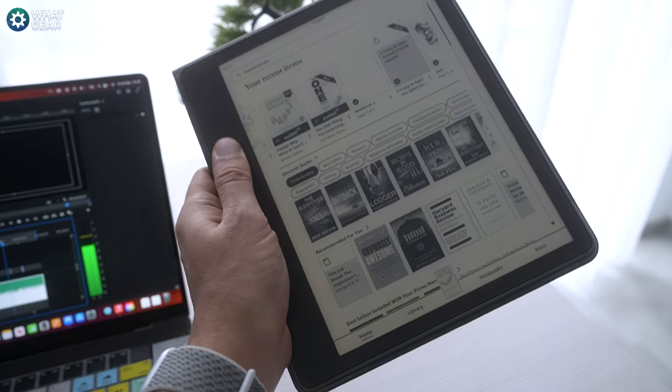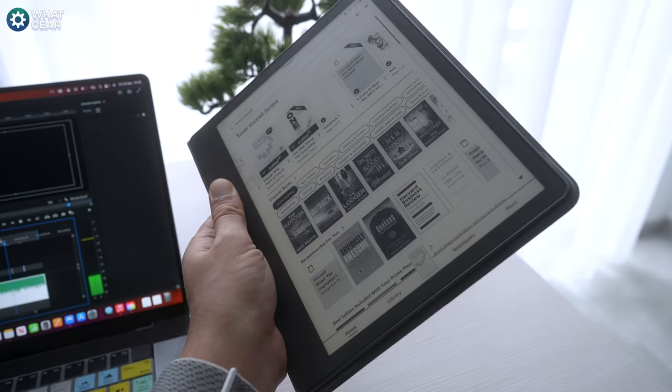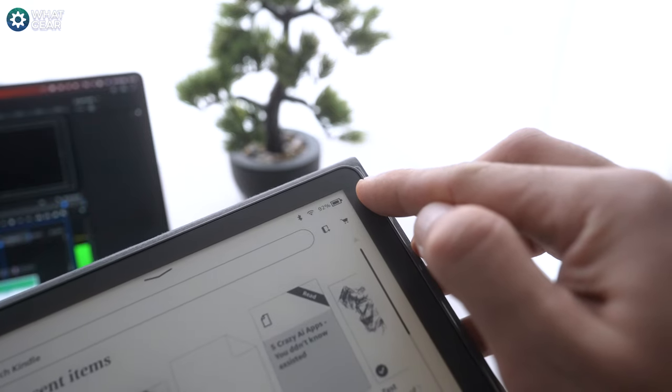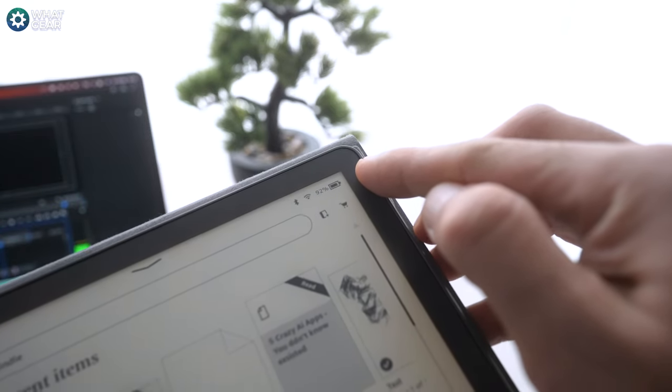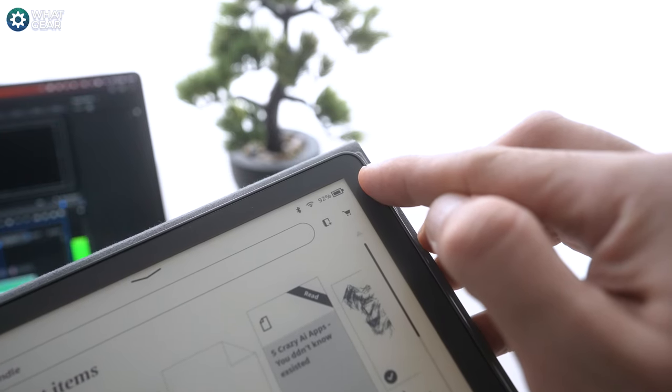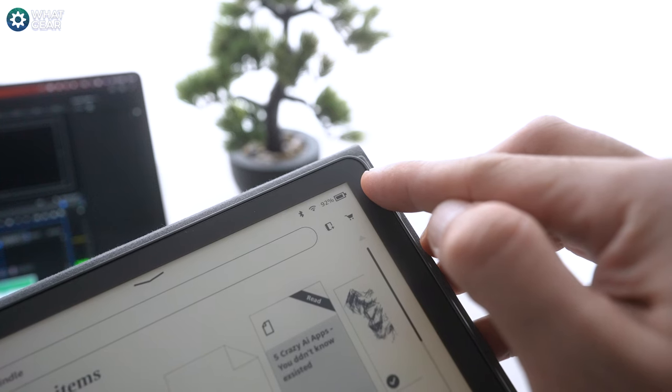And it also means there's probably more space inside the device for a bigger battery which takes me nicely onto one of the best features of the Kindle scribe. It truly has a powerful battery up to 12 weeks is what they say which means you'd only need to charge this four times a year but this is a best case scenario and it's not going to be the case for most people but here's some tips to get you to that 12 week battery life.